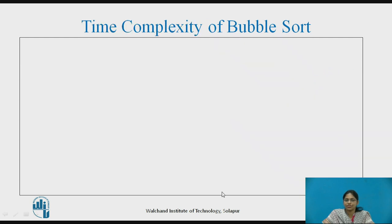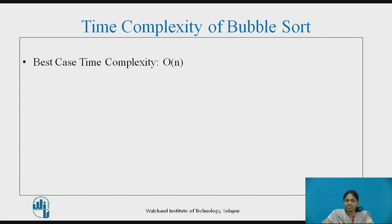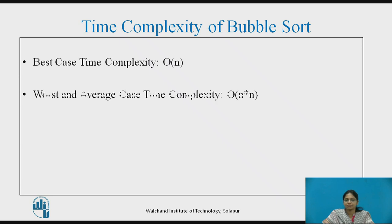Let us see the time complexity of bubble sort. The best case time complexity is O(N), achieved when the array is already sorted, requiring N comparisons. The worst case and average case time complexity is O(N²), achieved when we want to sort the array in ascending order but the given array is in descending order.